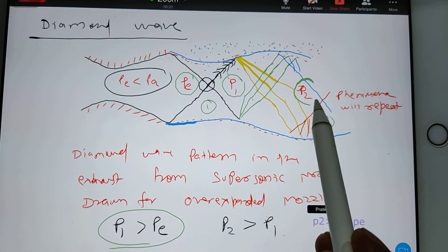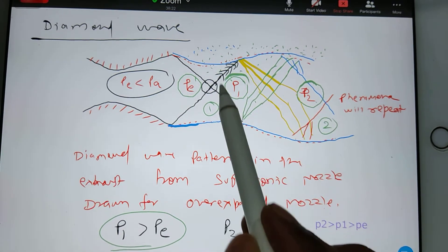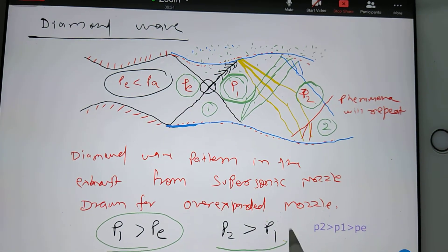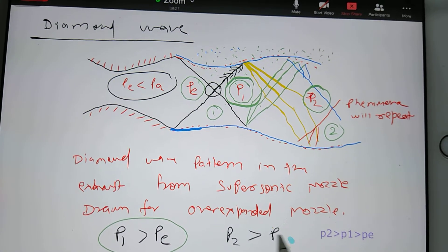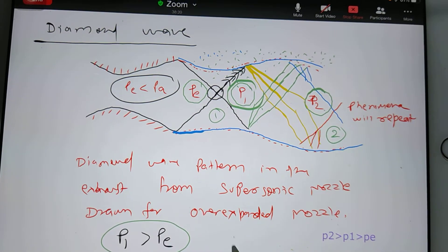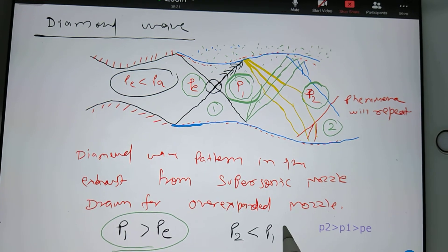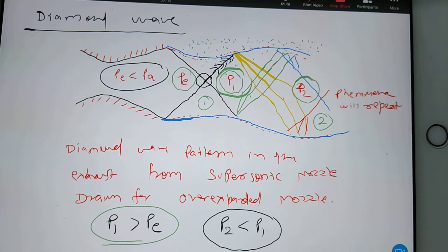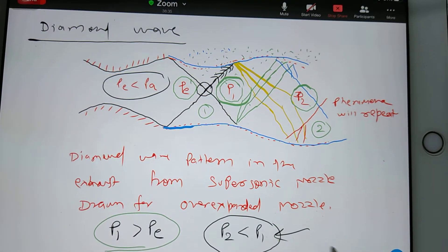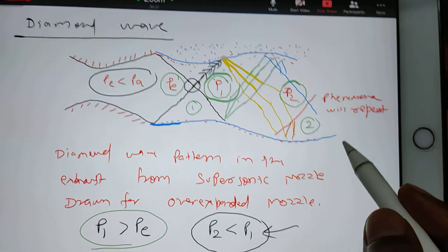Then this P2 will be less than this P1. Sorry, P2 has to be less, guys. I think I have done a mistake here. Yeah, P2 has to be less than P1 because in expansion pressure decreases. No doubt in that. Just correct this. I hope everyone has taken the diagram.